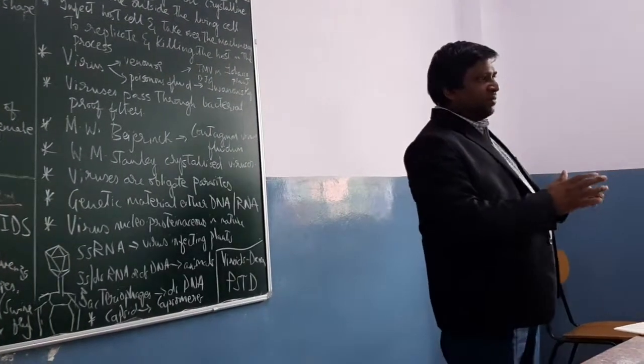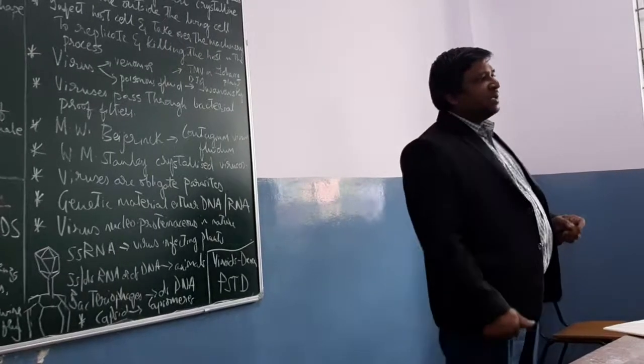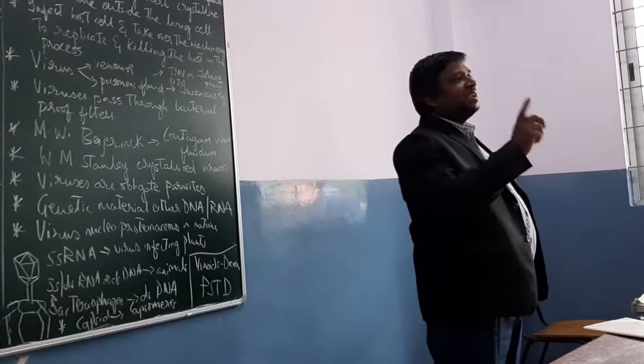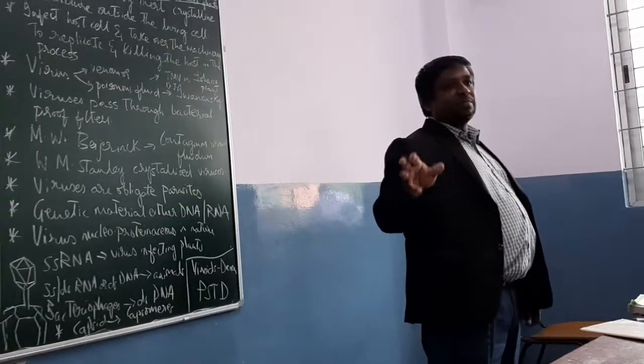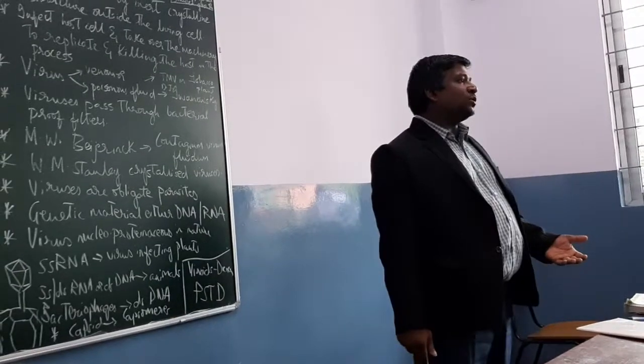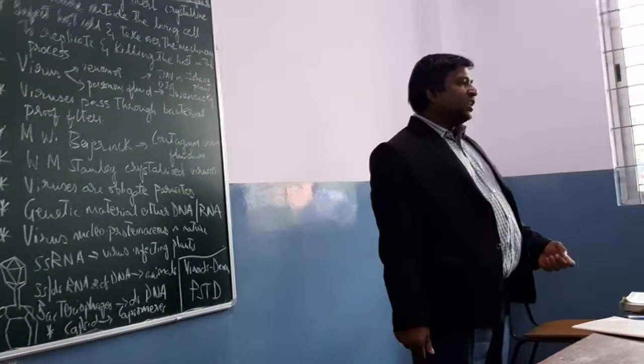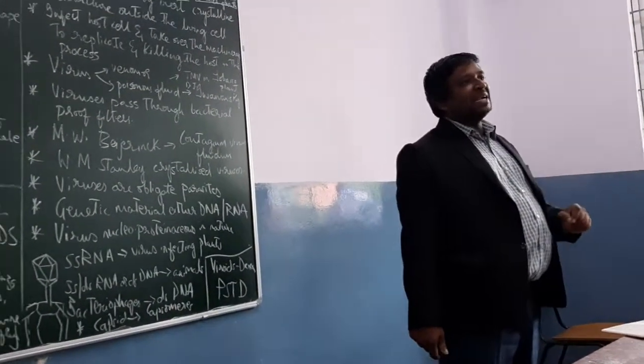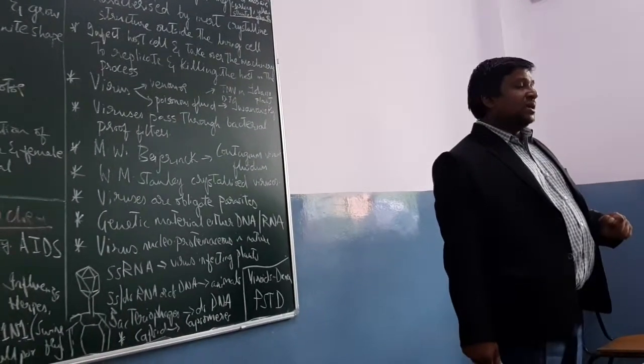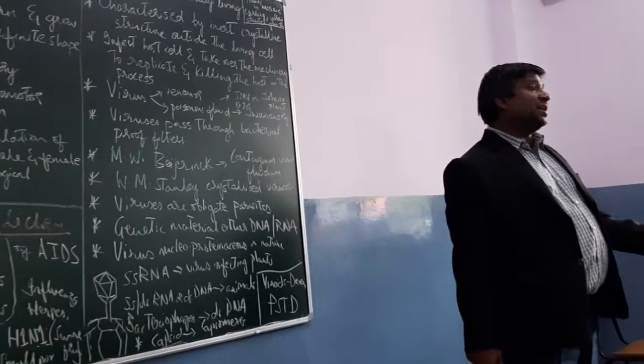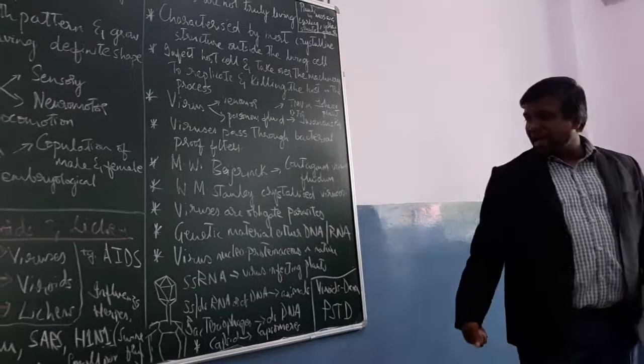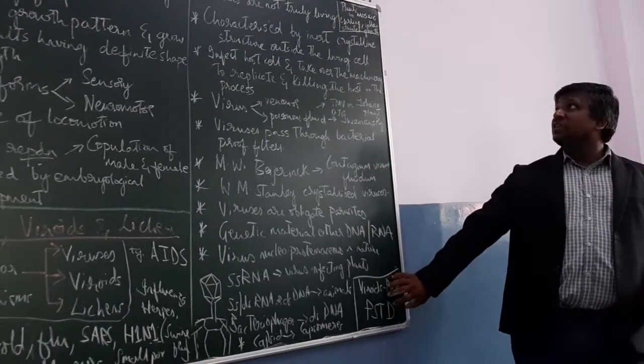Viroids, very briefly given in your textbook, were discovered by Diener. They are naked genetic material which infects plants. Potato spindle tuber viroid infects potato plants and causes potato spindle tuber disease. It is RNA genetic material which infects them. That is the brief description.